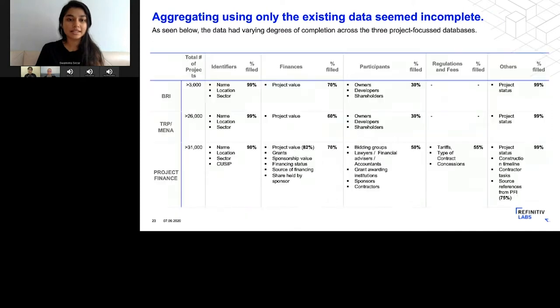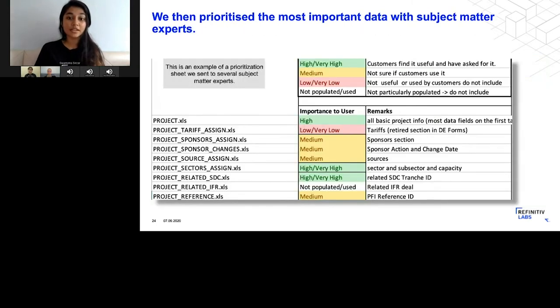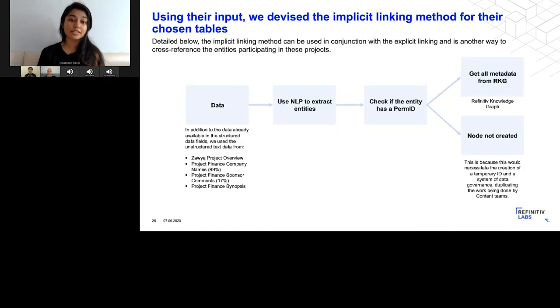We realized that aggregating using the existing data was incomplete because it didn't allow us to leverage all the data across all of these databases. So we went back to the clients and subject matter experts to prioritize which tables were actually necessary to them. After looking into the data, we realized that there's a lot of assets that had unstructured data that wasn't actually being captured by the fields themselves. The data model hadn't actually evolved to capture everything that the content analysts were picking up when they were reading the data into the databases or manually entering it, or when it was being automatically scraped.